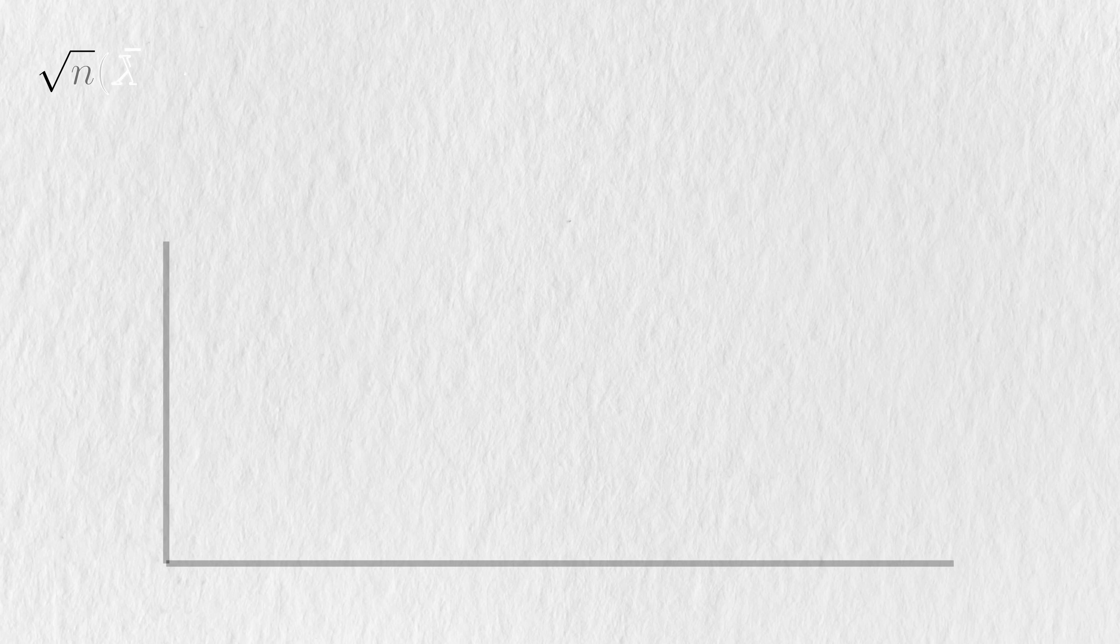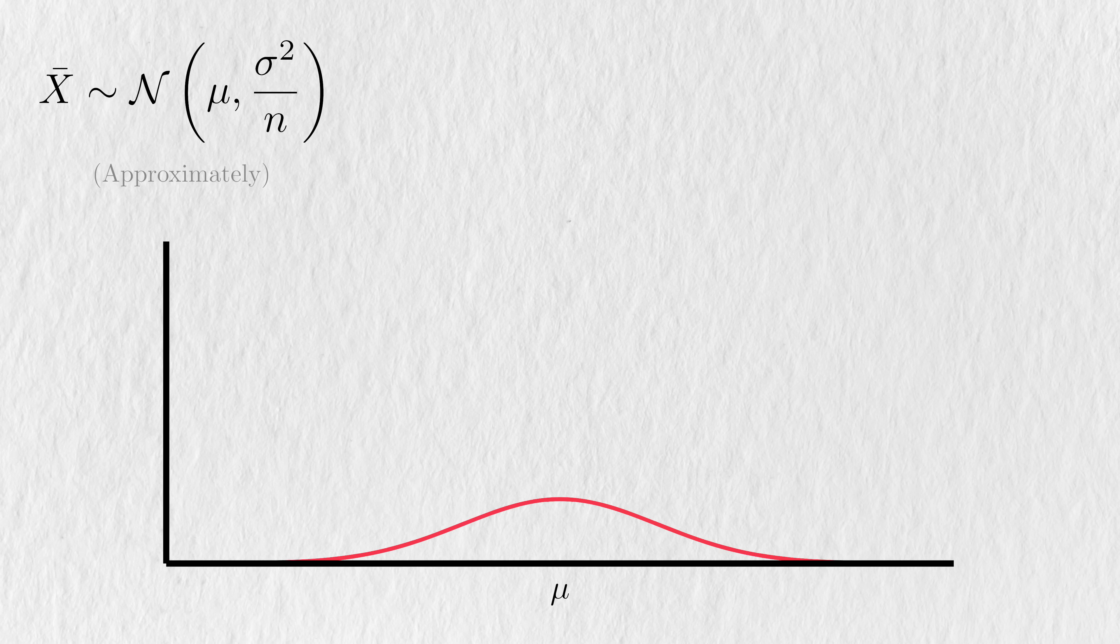The central limit theorem says that as our sample size approaches infinity, then this function of the sample mean has a normal distribution. With a slight abuse of notation, we can roughly say that the sample mean itself has a normal distribution, distinct from the distribution of the underlying data. This is both a very powerful idea, but also one of the first stumbling blocks that students often run into.